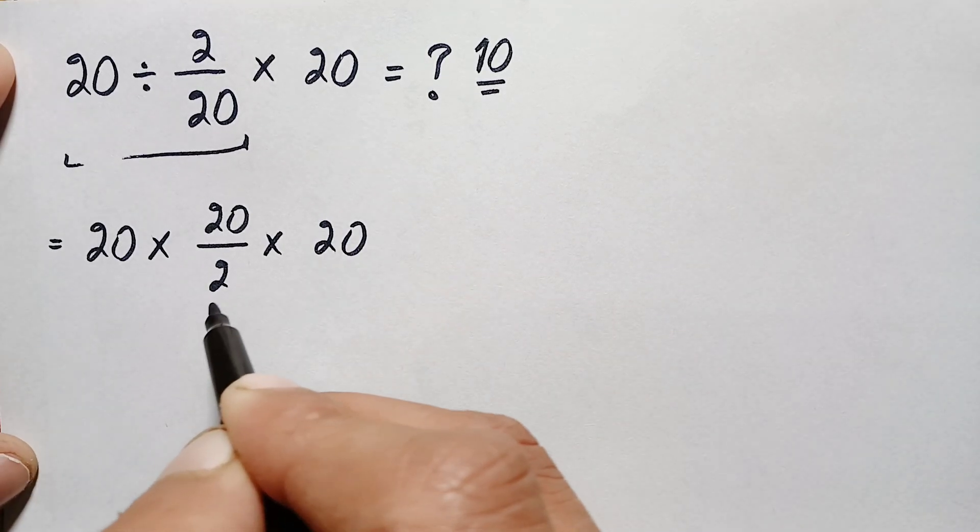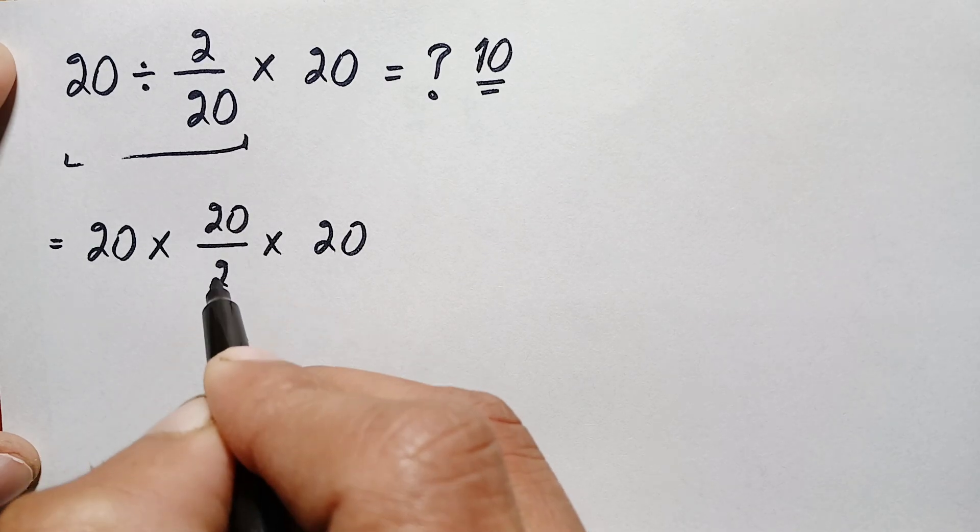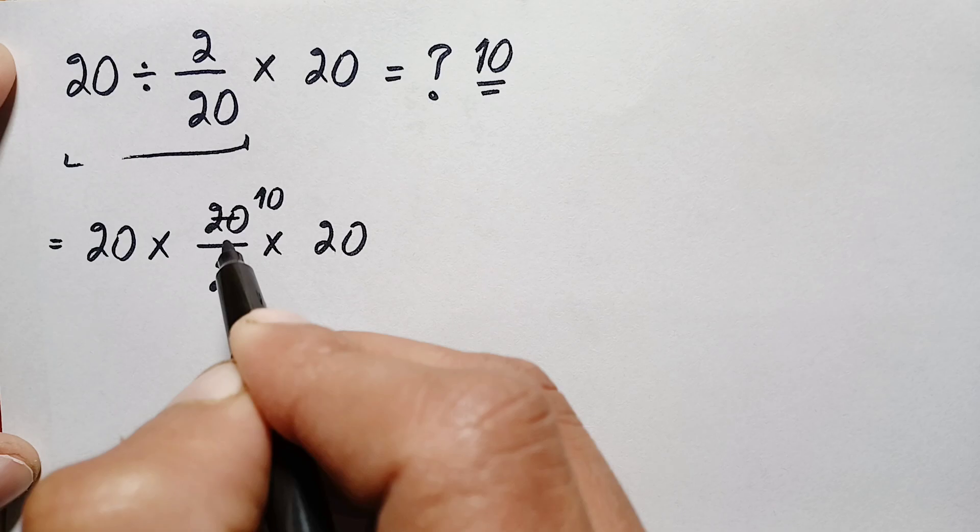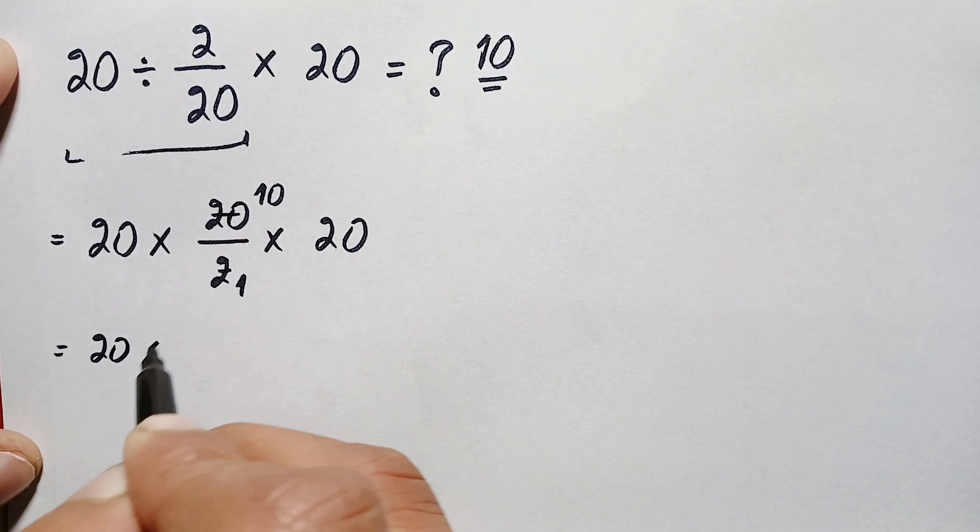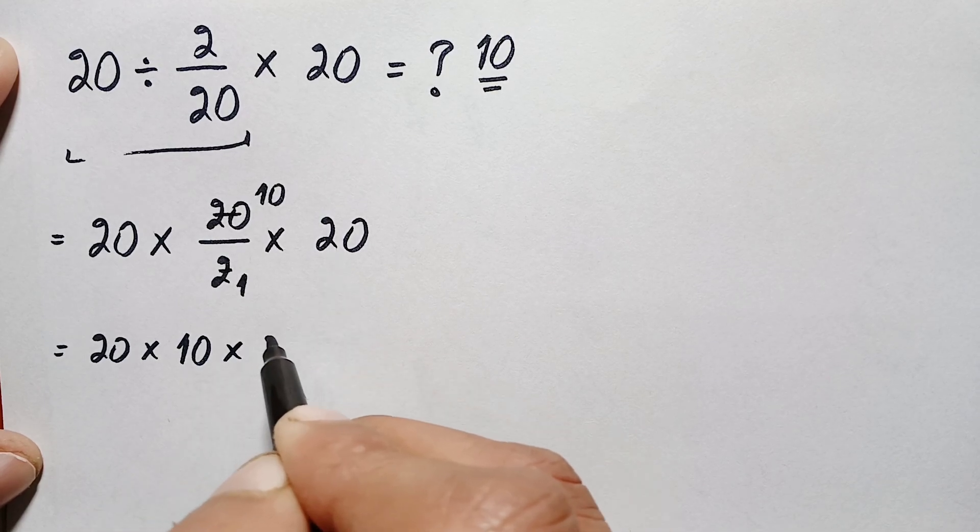Here we can simplify these two numbers, any 20. So to simplify these two numbers here, 2 times 1 is 2, 2 times 10 is simply 20. So this will become, this is just 20 times 10 times this is 10 times this is 20.